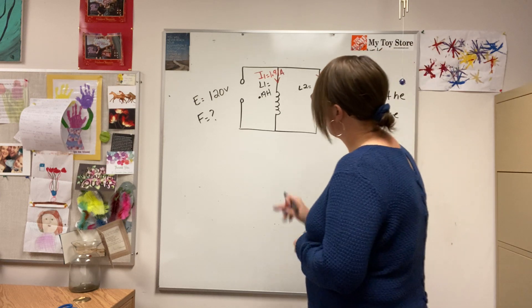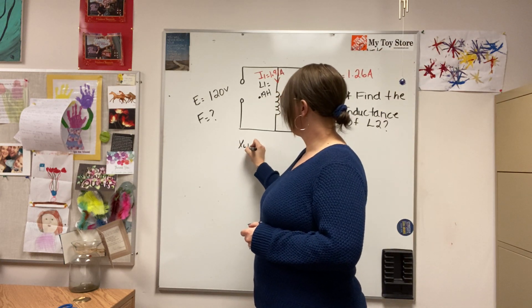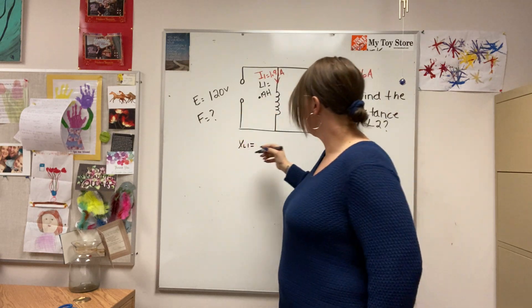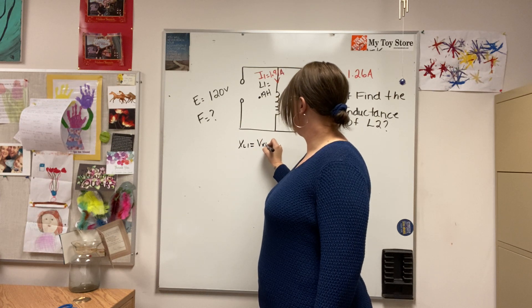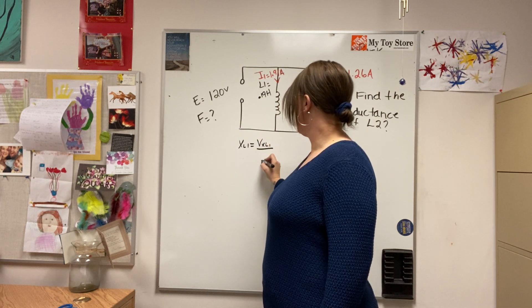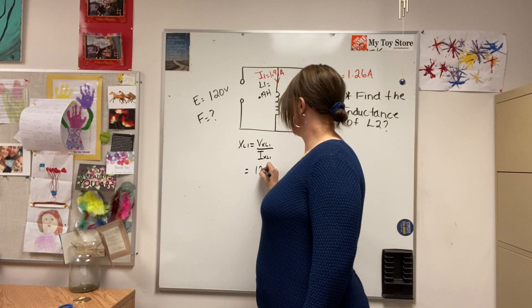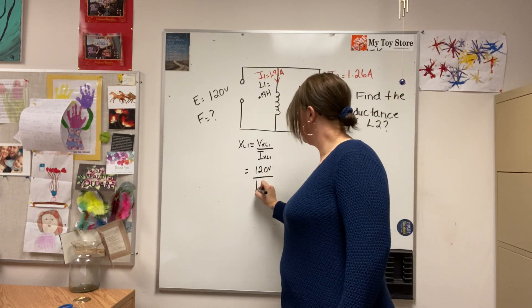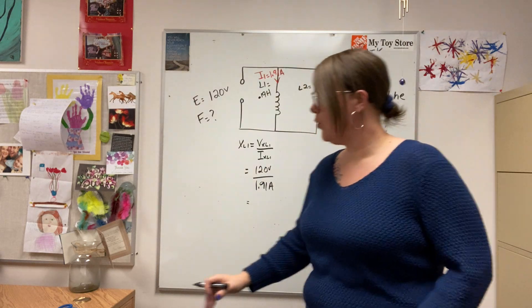So I'm going to find the XL of the first inductor. Again, these are pure, so it would be VXL1 divided by IXL1, which is 120 volts divided by 1.91 amps, and that will give me XL1.